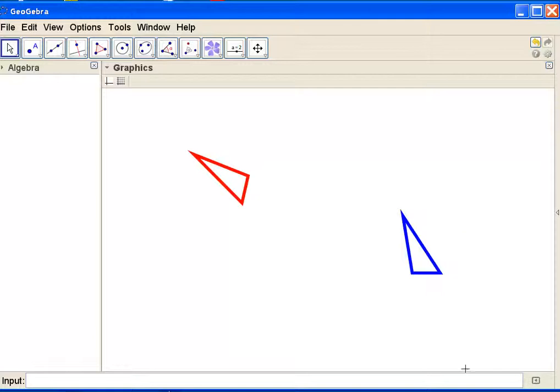Here I have a triangle on the left which is red and a triangle on the right which is blue. I'm going to try to transform the blue triangle onto the red triangle.